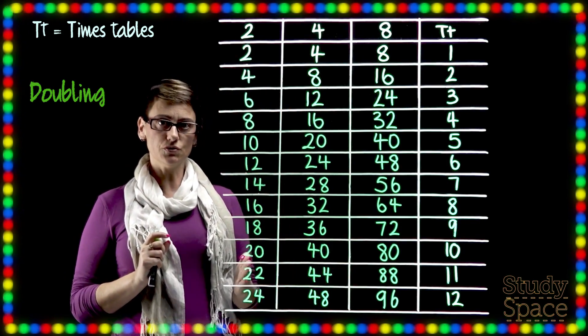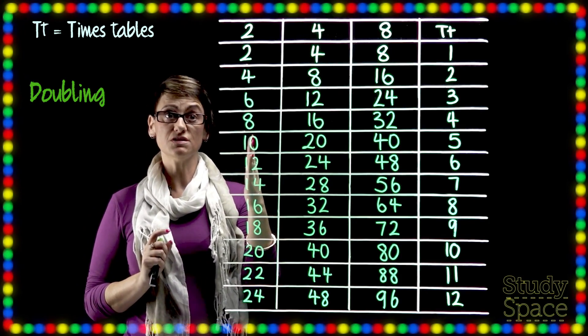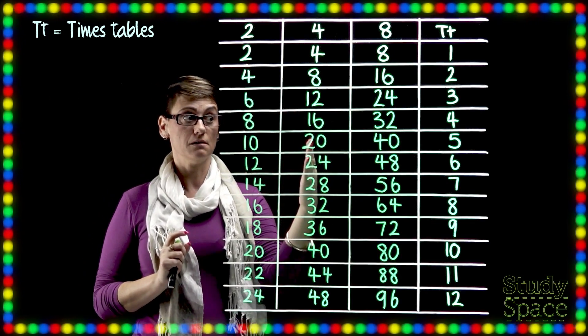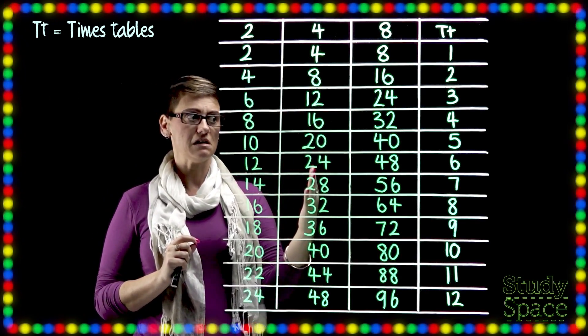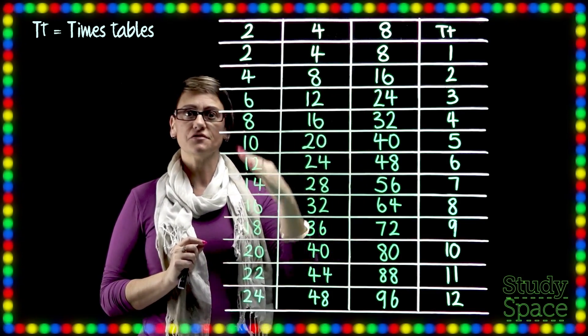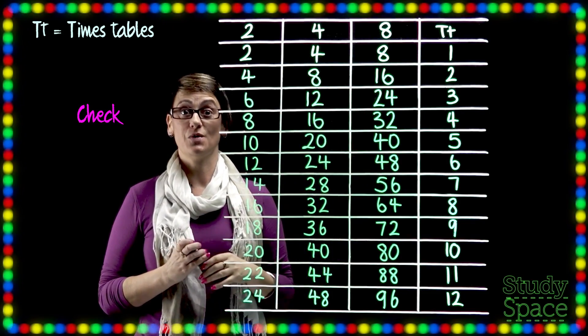So we started with the 2's. We doubled the 2's to get the 4's. Then we doubled the 4's to get the 8's. And there were lots of different ways that we could check it as we went.